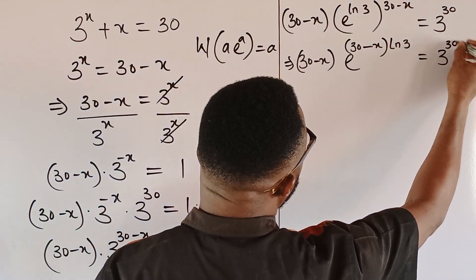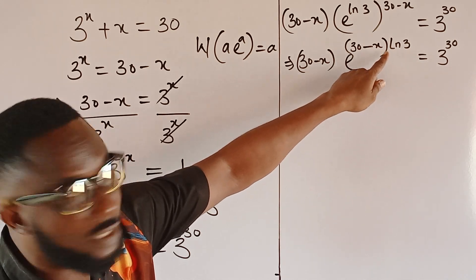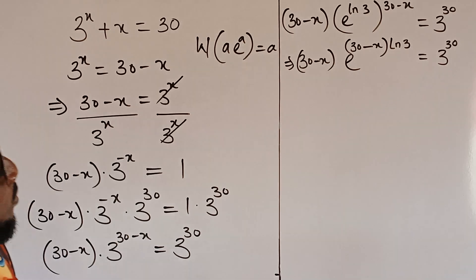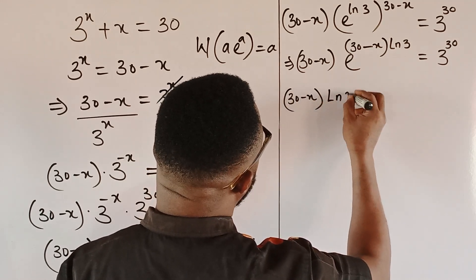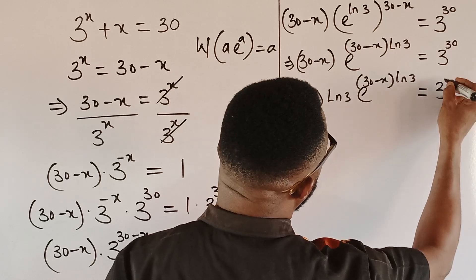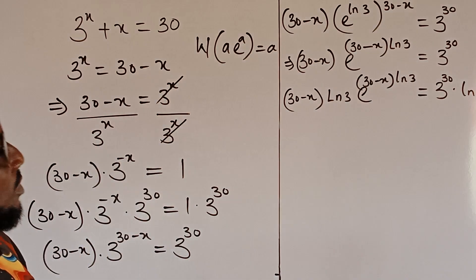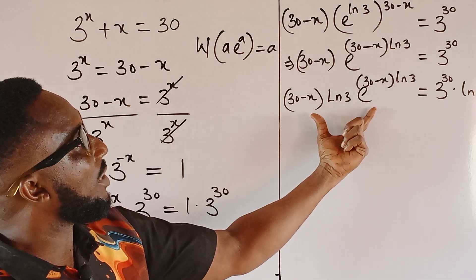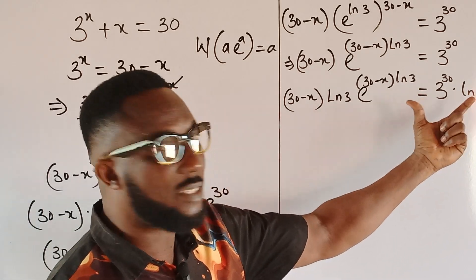We are progressing systematically. To achieve the same exponents and the same coefficients, we need to multiply both sides by ln of 3. So we get 30 minus x times ln of 3, times the exponential e to the power of 30 minus x times ln of 3, equal to 3 to the power of 30 times ln of 3. We have achieved the desired result on the left-hand side in the form w of a times e to the a.